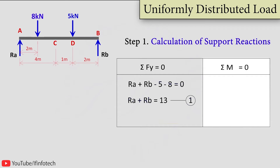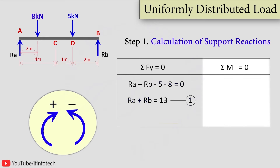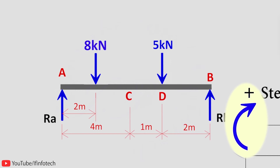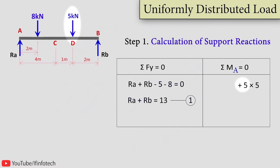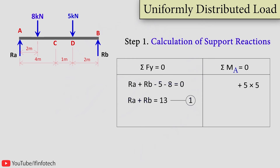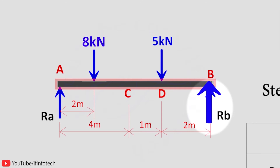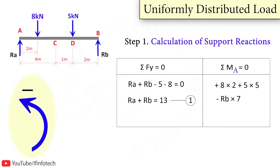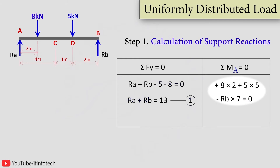The second equation of equilibrium is summation of moments, where clockwise moment is positive and anticlockwise moment is negative. Taking moments at point A: the 5 kN load pushes the beam downward, rotating it clockwise, so plus 5 kN into 5 meters distance from the fixed point. The 8 kN load also rotates beam clockwise, so plus 8 kN into 2 meters. Reaction force Rb pushes beam upward causing anticlockwise rotation, so minus Rb into 7 meters. By calculating this, I get Rb as 5.86 kN.